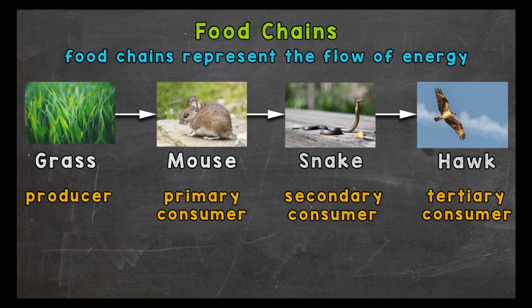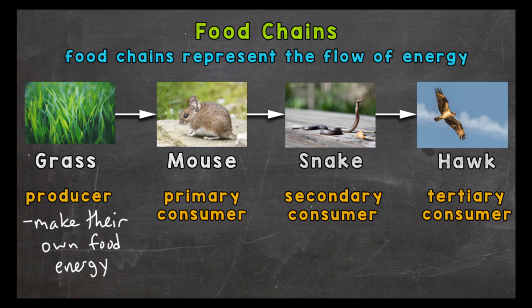So let's move on to producers. In our example here we have grass as our producer. Producers have the very unique ability to capture energy from the Sun and convert it to food energy. This energy helps plants grow, reproduce, and survive. Photosynthesis is the process in which producers do this — they harness energy from the Sun and turn it into chemical energy that organisms need here on Earth. When you think producers, think plants, algae, and even some bacteria. Producers produce or make their own food energy.